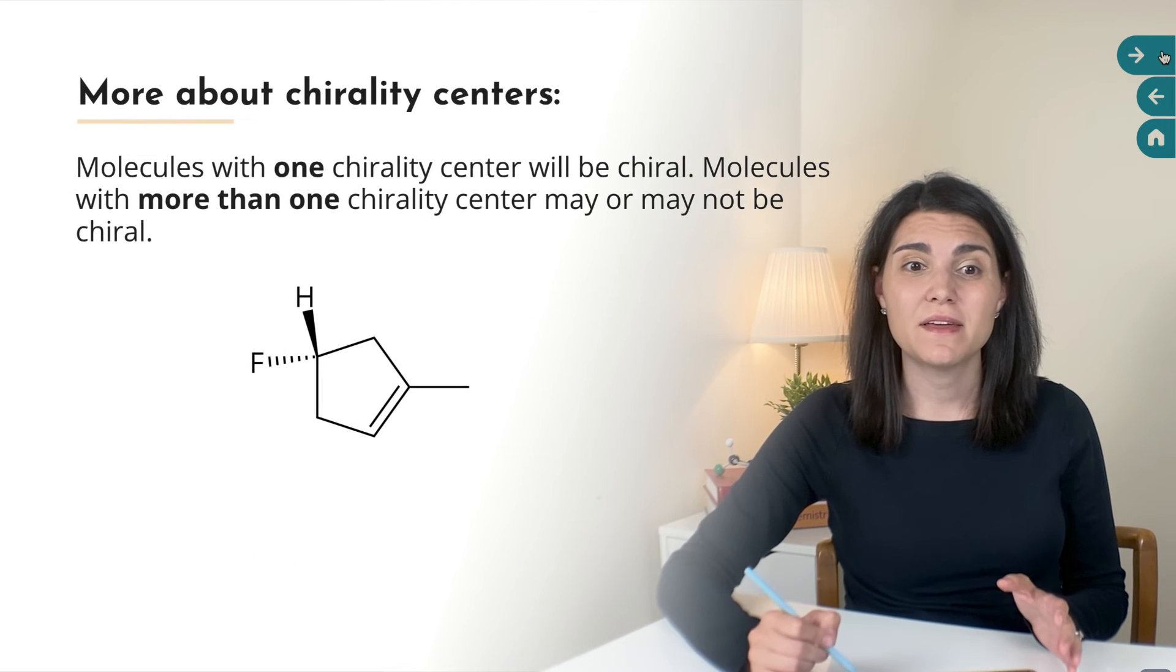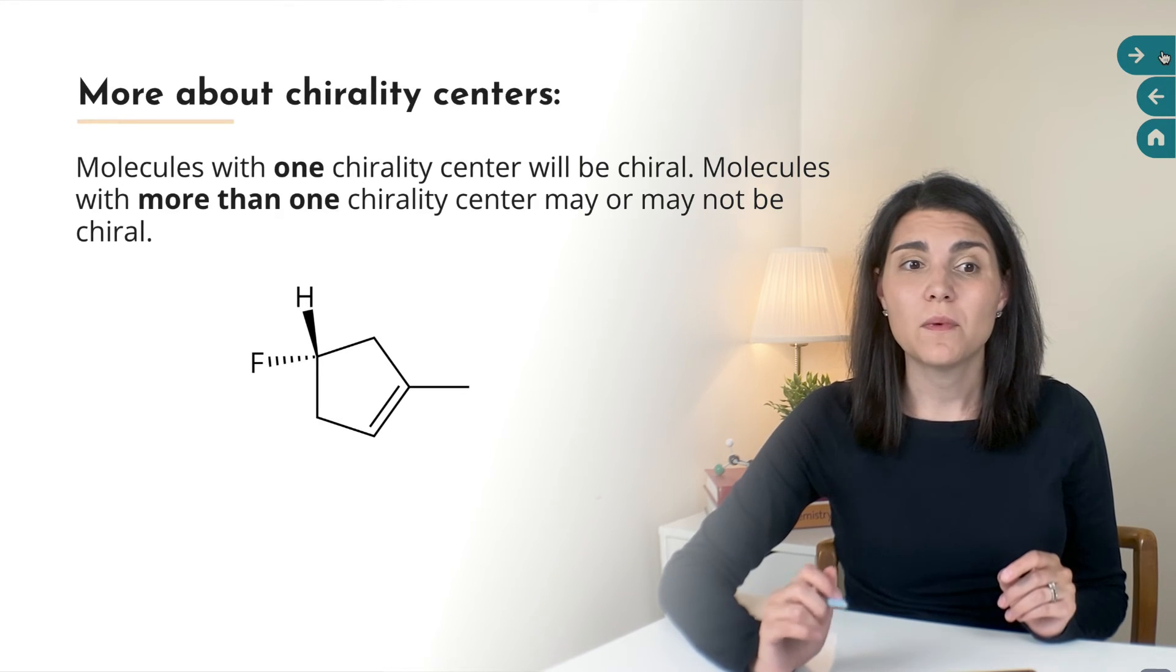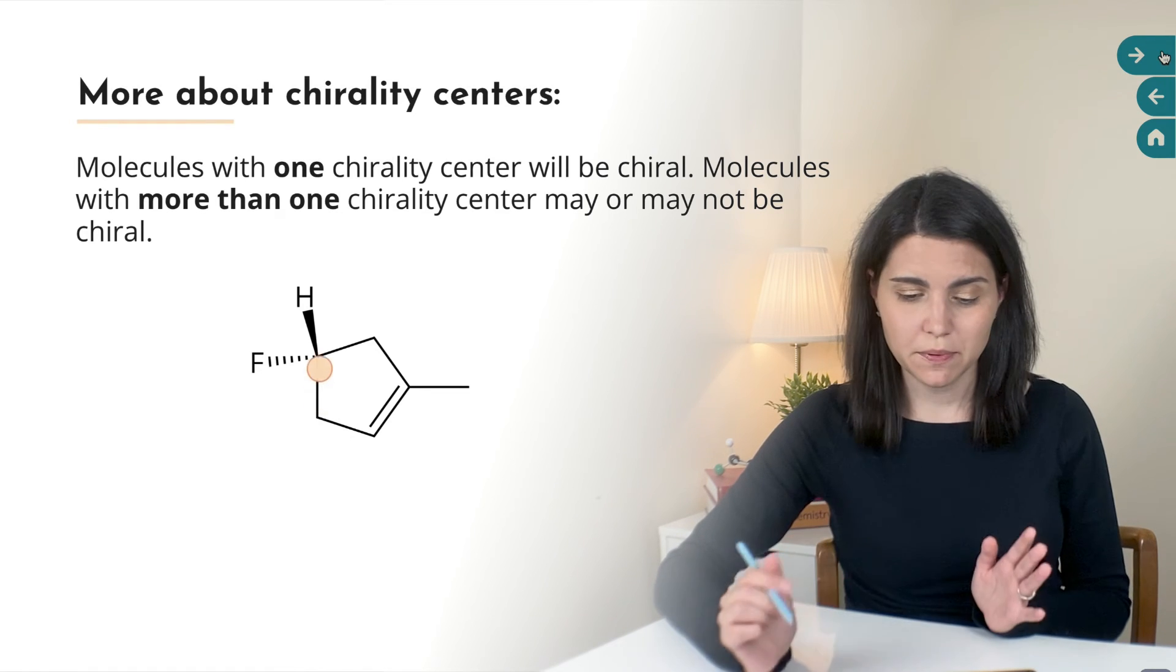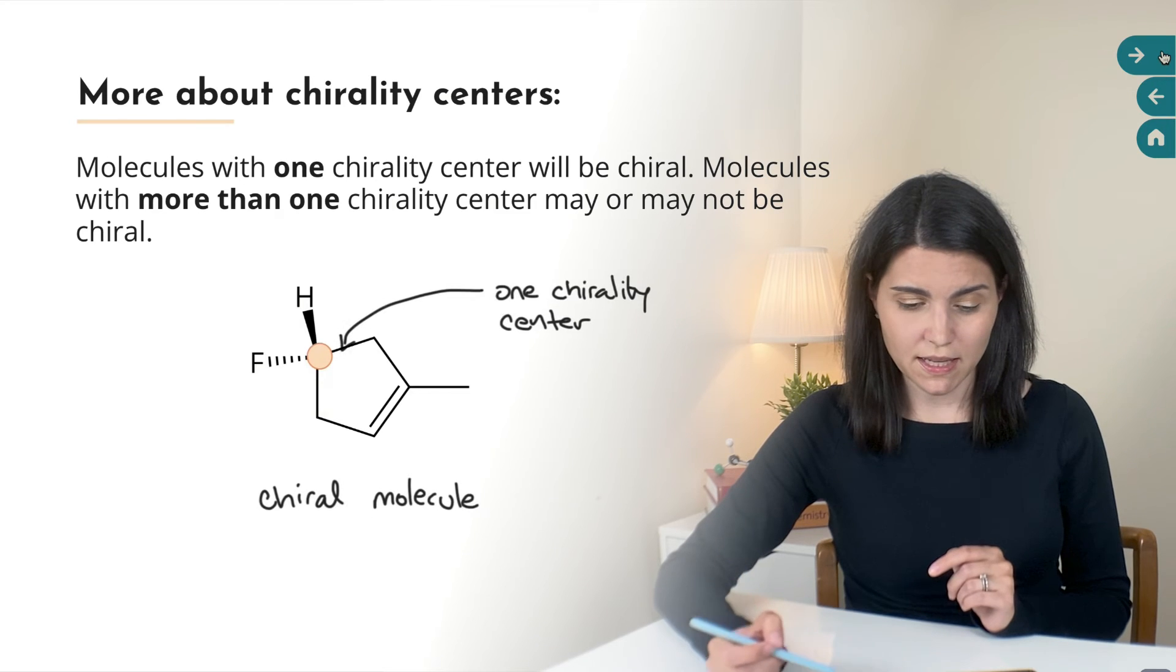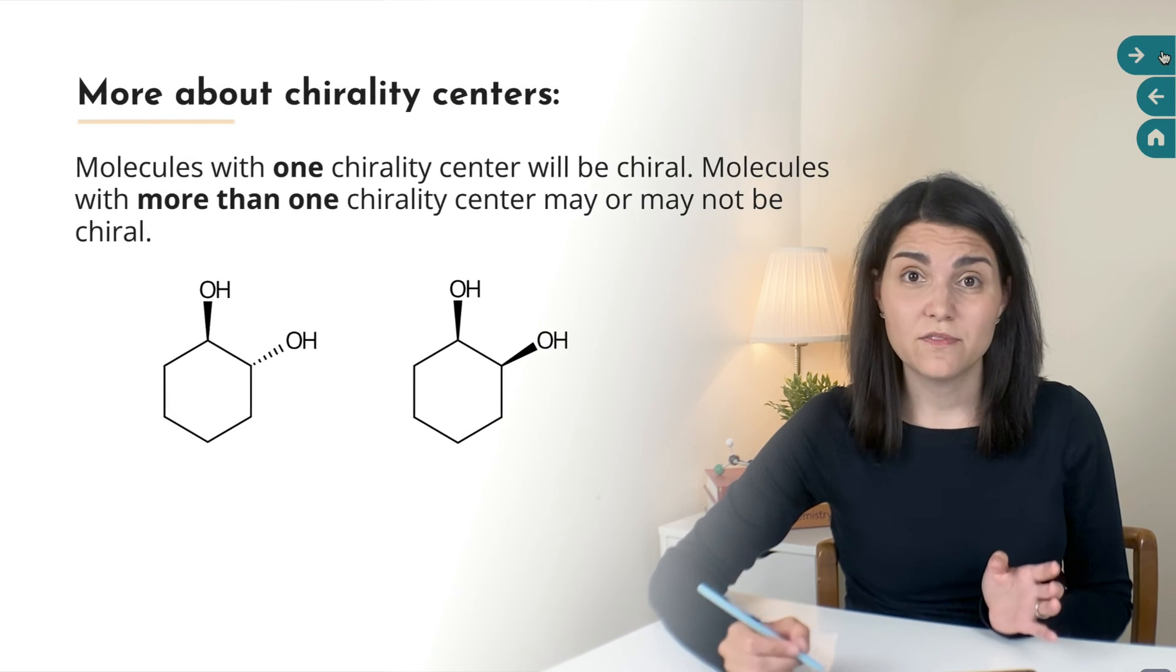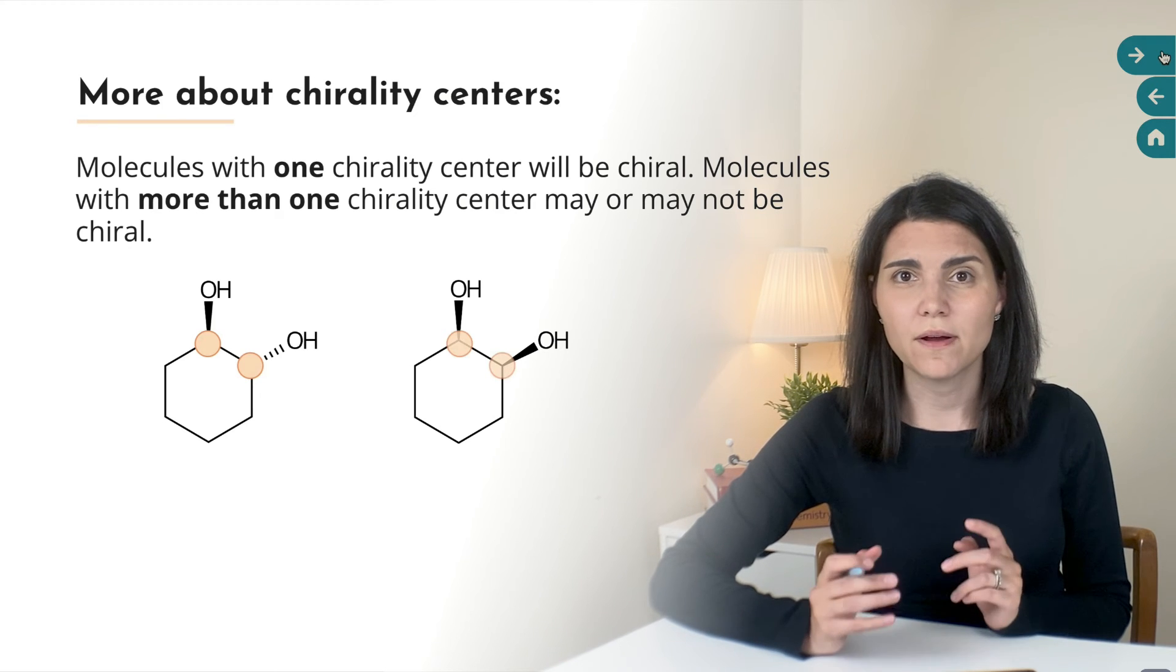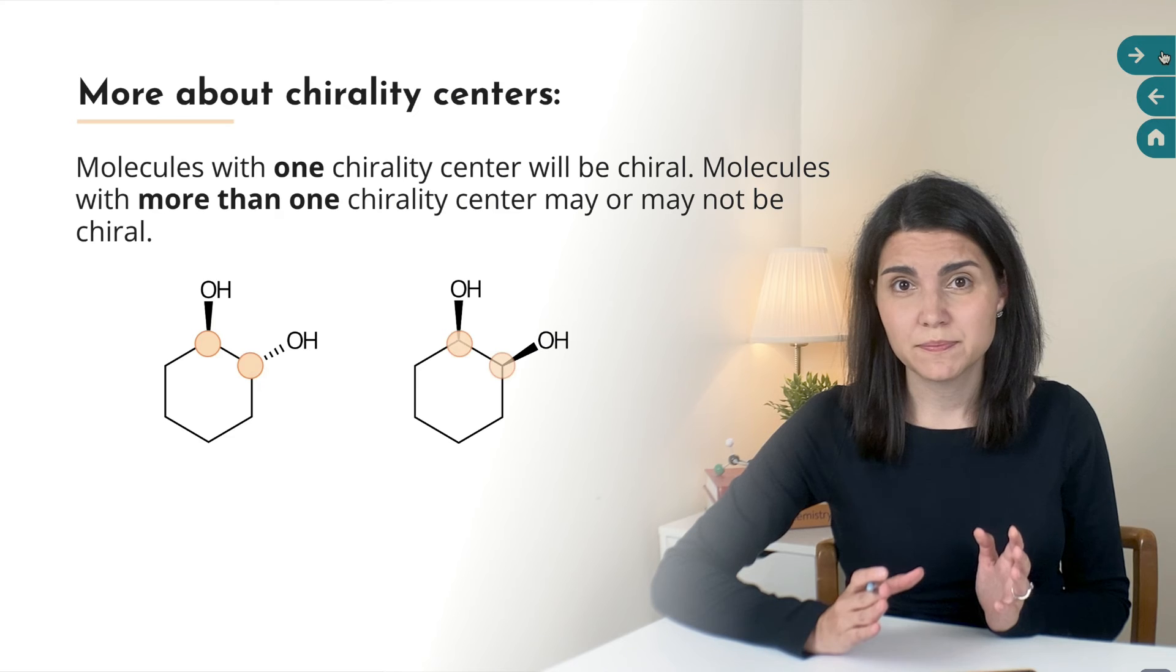It's important to clarify the difference between a molecule having chirality centers and being chiral. If a molecule has only one chirality center, it will be chiral. For example, this molecule below has a chirality center here, and that's the only chirality center that it has. So this molecule will be chiral. However, if a molecule has more than one chirality center, it may or may not be chiral, because the way that the chirality centers are arranged could give the molecule a plane of symmetry.